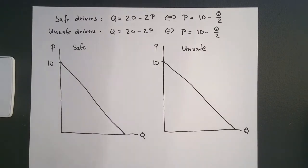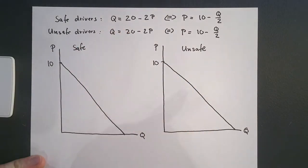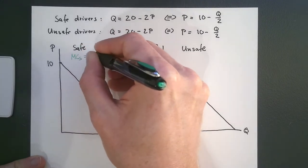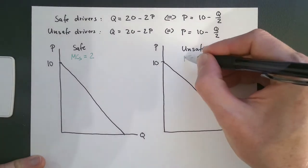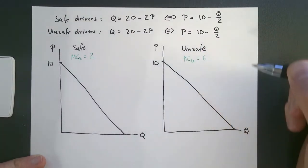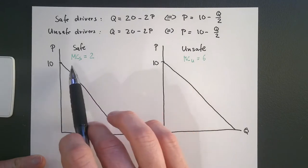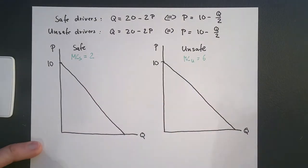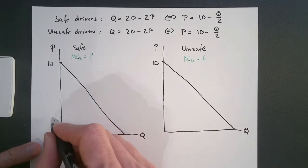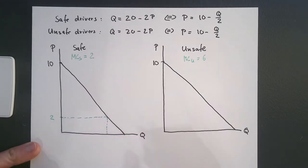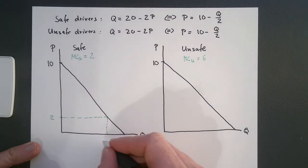Now, if there is no asymmetric information and assuming a perfectly competitive market, the safe drivers, since they have fewer accidents, have a marginal cost of $2, and the marginal cost of unsafe drivers is $6. If the insurance company can observe whether a driver is safe or unsafe, they can charge according to marginal cost. In this case, they charge $2 for safe drivers, setting the price at $2, and hence the quantity demanded is going to be 16.